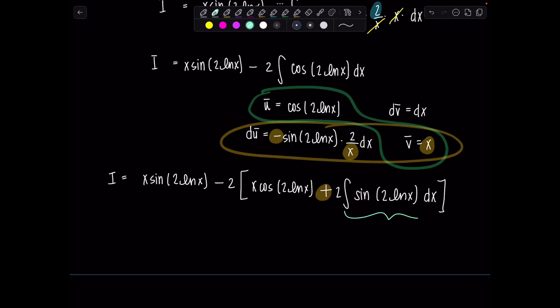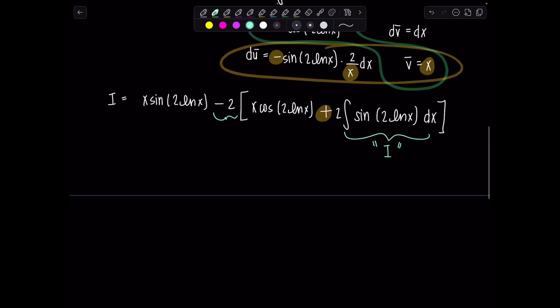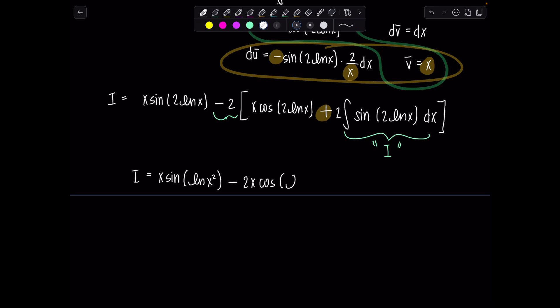Okay, so this is i, all of this right here, but don't forget we have to distribute. So let me clean up so we don't do anything crazy. So we have our original integral i equals x sine ln of x squared minus 2x cosine ln of x squared minus, that's right, 4i. Boom.